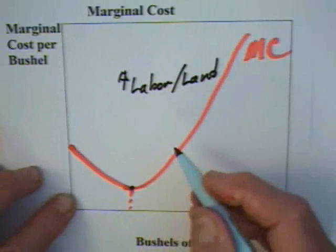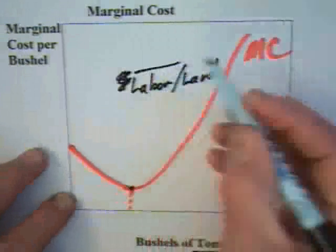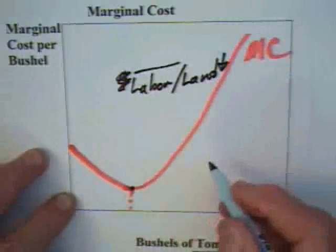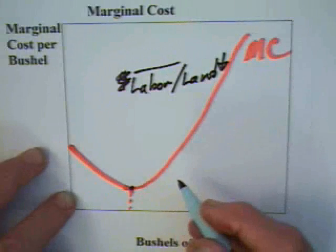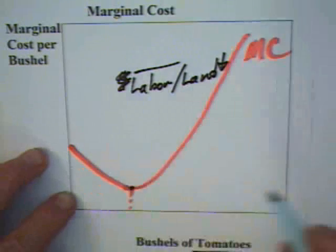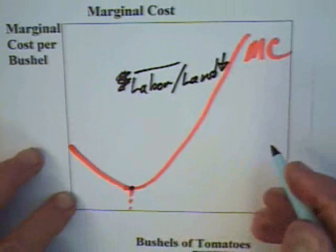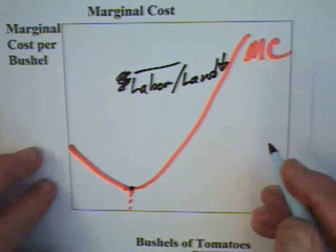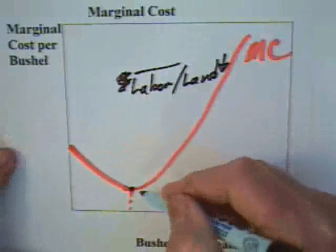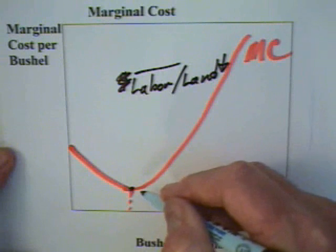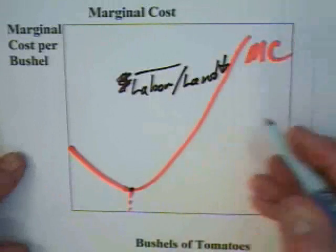We know marginal cost has to go up at some point. Otherwise, you could hold labor constant, decrease the amount of land, and still get output — which means that if you never had diminishing returns, you could just grow the world's tomato supply in a flower pot. And that's not likely to be the case. So the marginal cost structure is one of declining marginal cost due to benefits of specialization of labor, and then diminishing returns, which drives the cost back up.